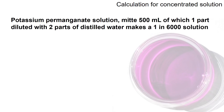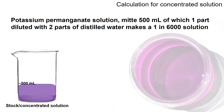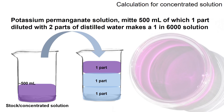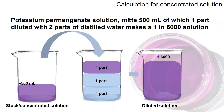Let's look at the first example, where you have to prepare 500 ml of potassium permanganate solution in which one part of it diluted with two parts of water will give a solution with a concentration of 1 in 6000. Imagine you have 500 ml of potassium permanganate stock or concentrated solution, and you take one part out to be diluted with two parts of water — you will end up with a solution of concentration 1 in 6000.